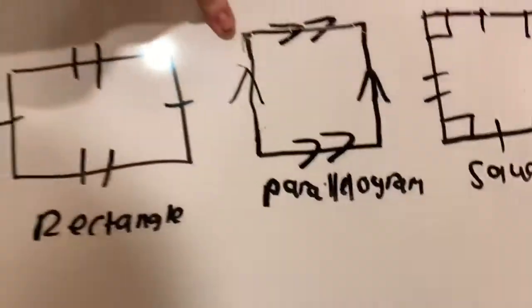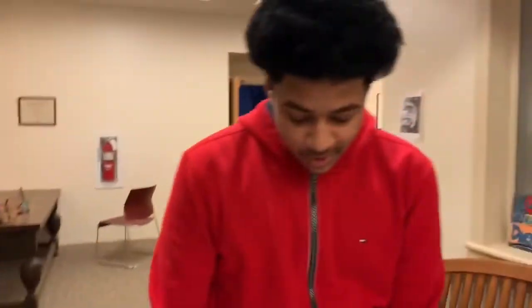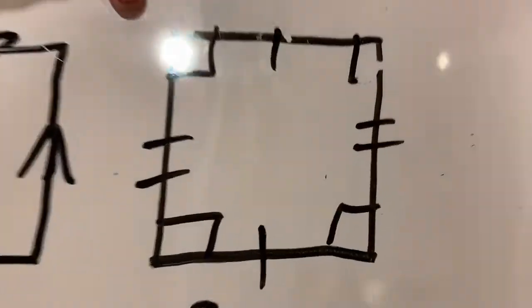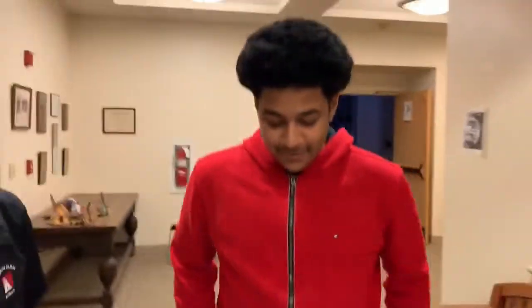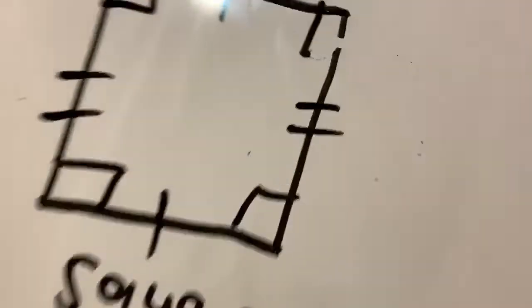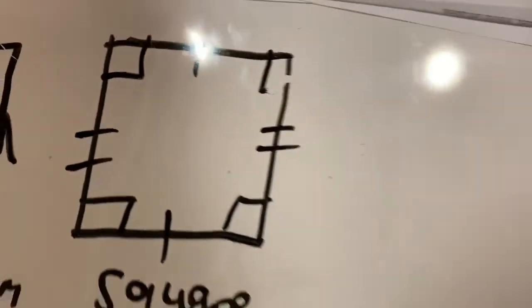Parallelogram — all four sides equal one another. But this leads us into squares. The square has four equal sides, and it has 90 degrees in each angle making 360 degrees.